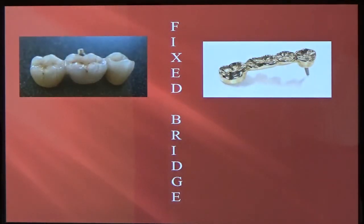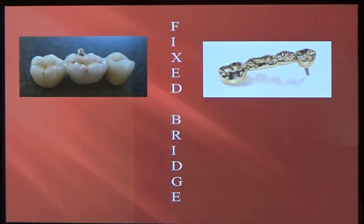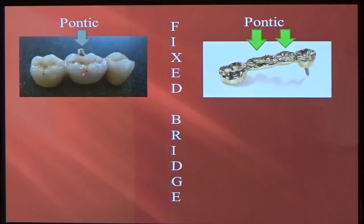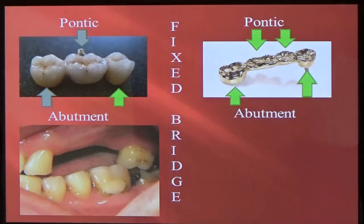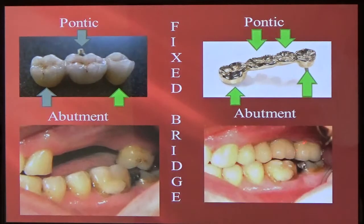Here's a picture of a couple of bridges. You have a porcelain bridge — three units: one, two, three — with an abutment here and an abutment here. Over here you've got an anchor in gold and one in porcelain. The pontics are the missing teeth; the abutments are what anchor the bridge on. These are cemented, so they don't come off. Here, we're missing some teeth — this was going to be an abutment, this is going to be an abutment — and you can replace it with a bridge. This is a four-unit bridge: two abutments and two pontics.